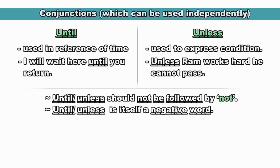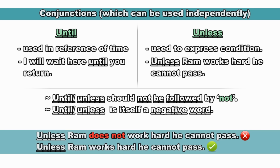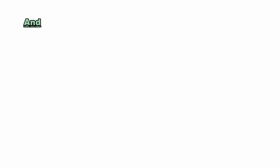Please note: 'until' and 'unless' should not be followed by 'not', because both are themselves negative words. 'Until' means 'till not' and 'unless' means 'if not'. Using 'not' after them creates a double negative, which is incorrect. For example: 'Unless Ram does not work hard, he cannot pass' — using 'does not' here is wrong. The correct sentence is: 'Unless Ram works hard, he cannot pass.'